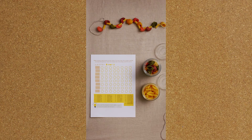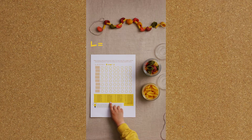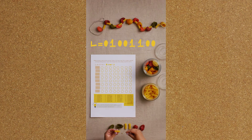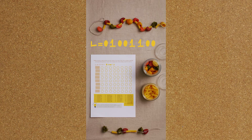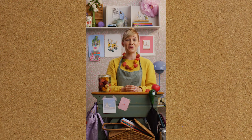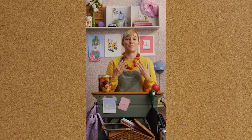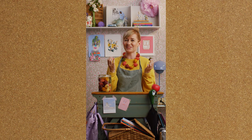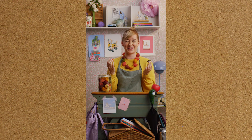You can make a binary code version of your name. This would be the first letter of my name. The smallest unit of data in computers is called a bit. A bit is often represented as either one or zero, on or off. Can you try making another binary picture?